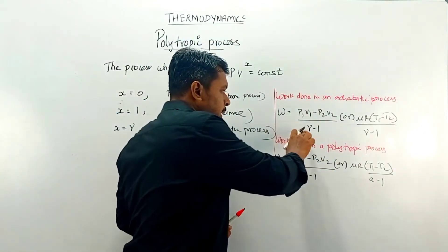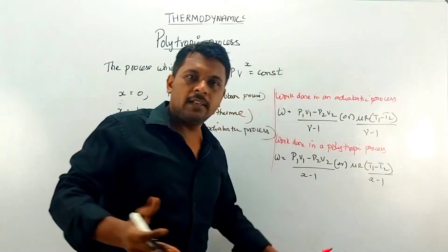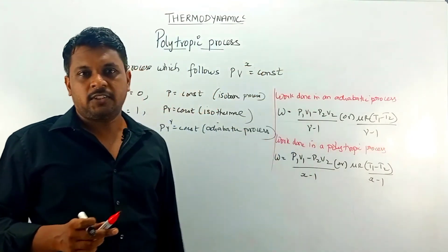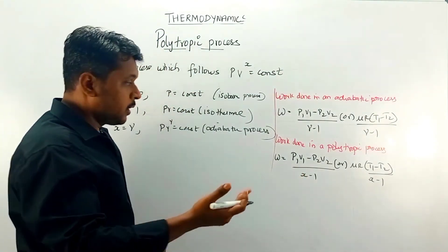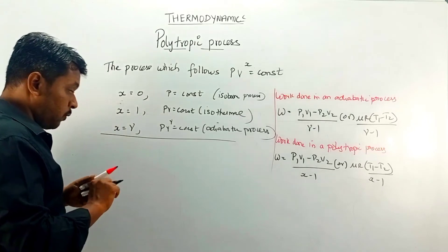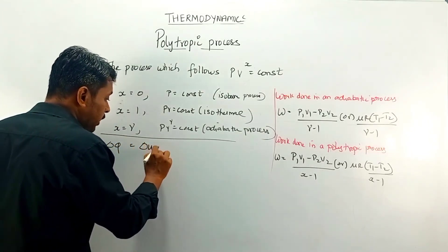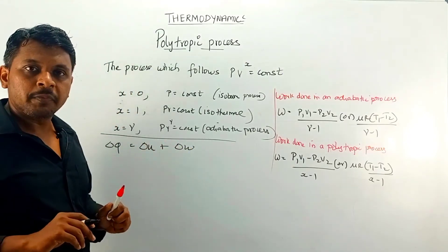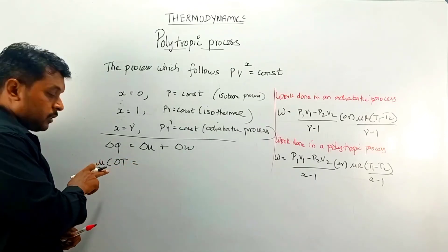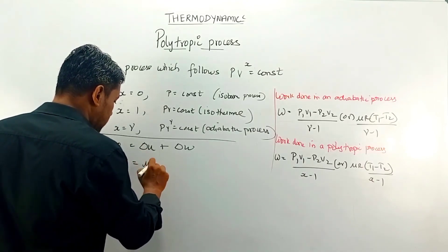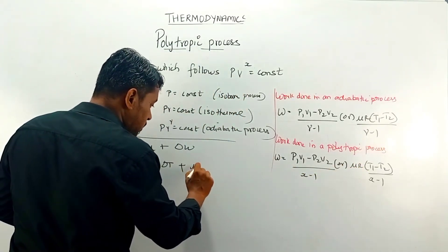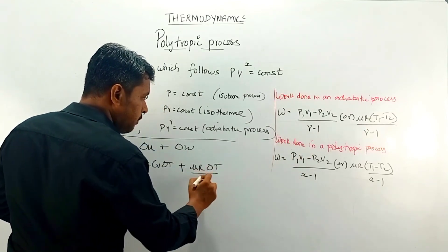The derivation remains the same; we just replace gamma by x, since we already discussed the derivation of work done for the adiabatic process in earlier lectures. This is the expression for work done in a polytropic process. Now I will find the molar specific heat capacity for a polytropic process using the first law of thermodynamics. We need to find c, so delta Q = mu * c_v * delta T plus the work done, which for the polytropic process is mu * R * delta T / (x - 1).